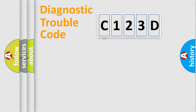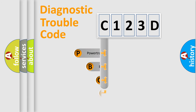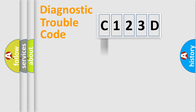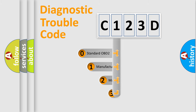First, let's look at the history of diagnostic fault code composition according to the OBD2 protocol, which is unified for all automakers since 2000. We divide the electric system of an automobile into four basic units: Powertrain, Body, Chassis, and Network. This distribution is defined in the first character of the code.